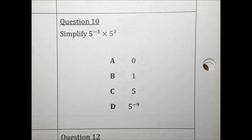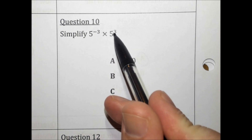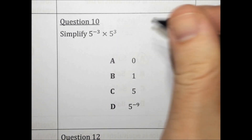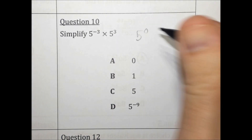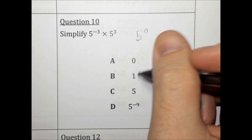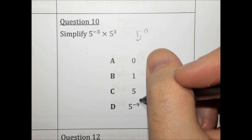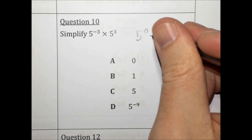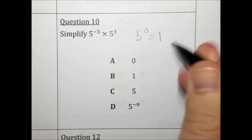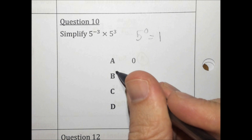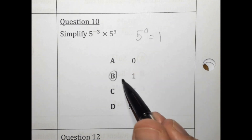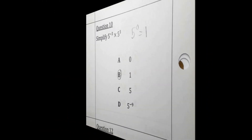Simplify 5 to the negative third times 5 to the third. When you multiply, you add the exponents. Negative 3 plus 3 is 0. 5 to the zero equals 1. So we're looking for choice B. The answer is B.